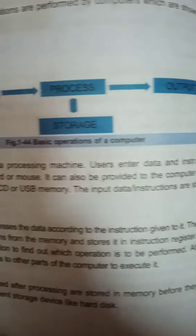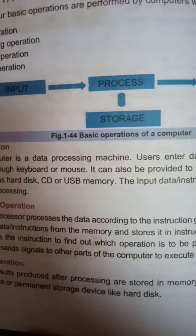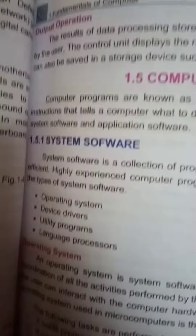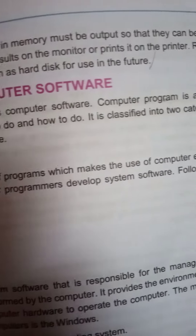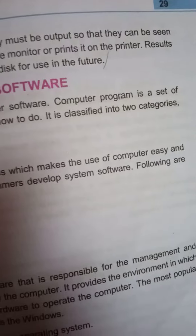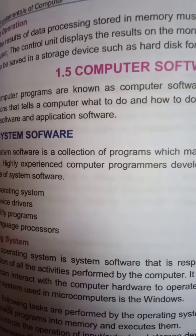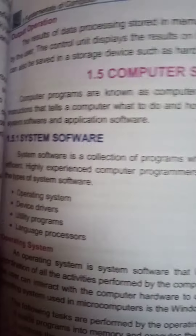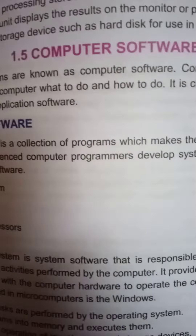The next operation is storage. The result produced after processing is stored in the memory. They are also stored in output devices or permanent storage devices like a hard disk. After processing, the result is always stored on the storage devices. The result of the data processing stored in the memory must be output so that it can be seen by the user. The control unit displays the result on the monitor or prints it on paper.